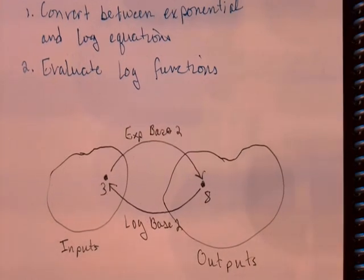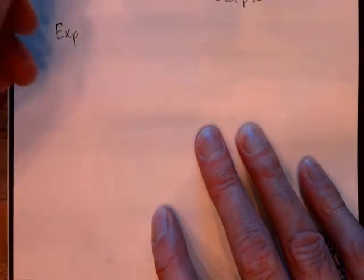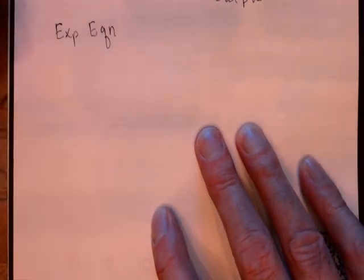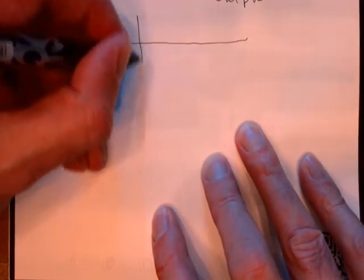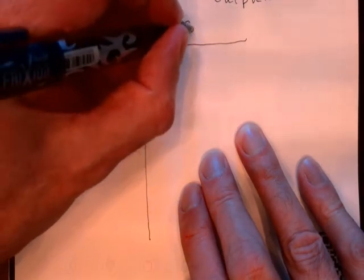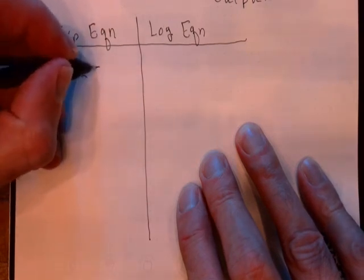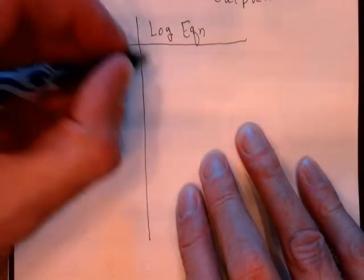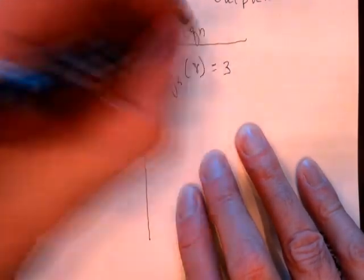Each exponential function has its own special inverse function. So let me give you some examples here. I'm going to make a table. And on the left-hand side of the table, I'm going to put an exponential equation. And when I say an exponential equation, I just mean an equation that involves an exponent. And over here on the right-hand side, I'm going to write the equivalent log equation. So the one we just saw up there, 2 power 3 equals 8.